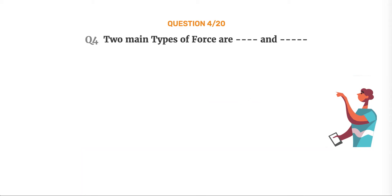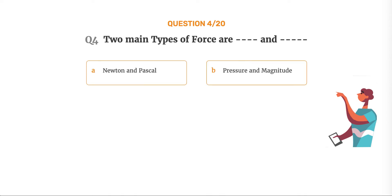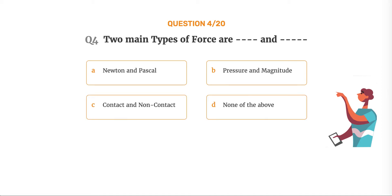Question number 4. Two main types of force are blank and blank. Option A: Newton and Pascal. Option B: Pressure and magnitude. Option C: Contact and non-contact. Option D: None of the above.